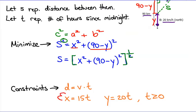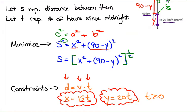The constraints help eliminate the problem of too many letters. X is the distance ship A travels — that's velocity times time, so X equals 15T. Y is how far ship B travels — Y equals 20T. So I'll substitute 15T for X and 20T for Y, giving a formula with S and only T.